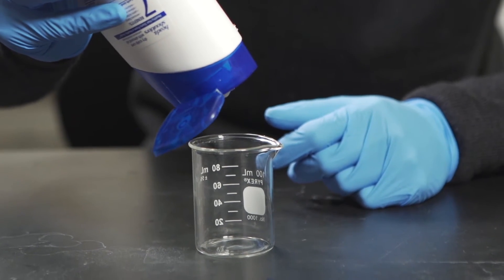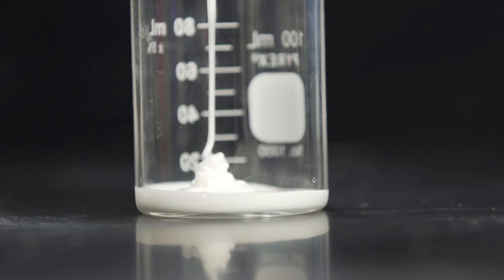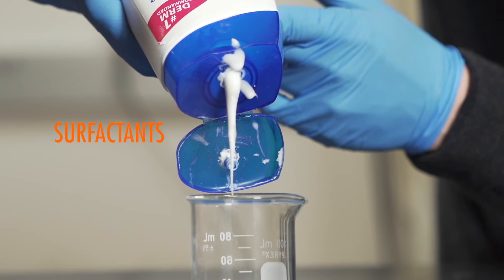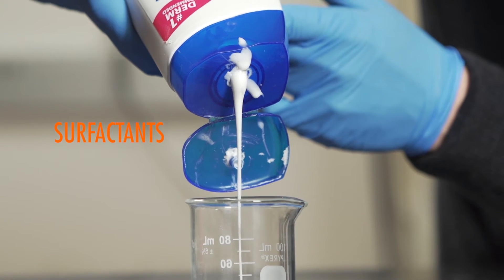But how does shampoo stick to the bottle anyway? The chemicals that make shampoo good at clinging to the dirt in your hair, called surfactants, also make it good at sticking to surfaces like the inside of a bottle.